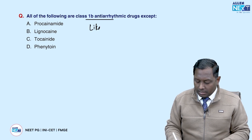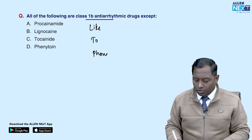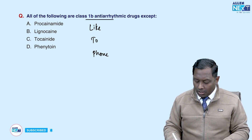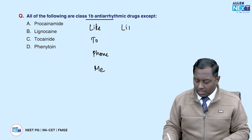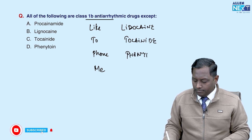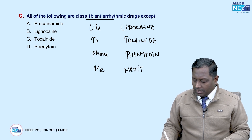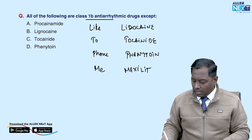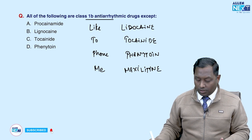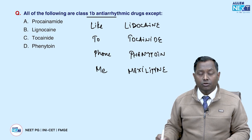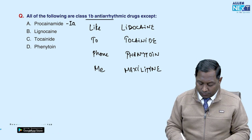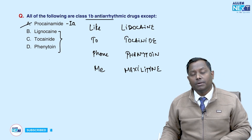All of the following are Class 1b antiarrhythmic drugs except — what are the 1b drugs? Use the mnemonic: 1b is the 'brave' group who say 'we all like to phone me.' The drugs are lidocaine/lignocaine, tocainide, phenytoin (the one antiepileptic with antiarrhythmic property), and mexiletine. So all of the following are 1b except procainamide, which is Class 1a. The correct answer is procainamide.